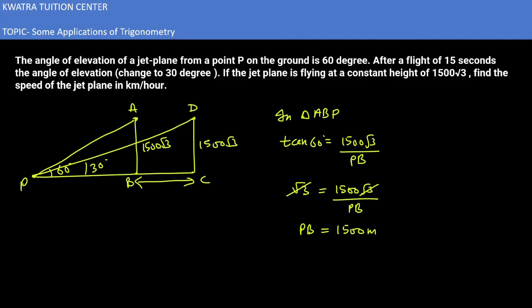Next triangle we consider, it would be PDC. Tan 30 is equal to DC which is 1500 root 3 over PC. Now here we get the PC value. It would be 1500 root 3 and tan 30 is 1 by root 3. So root 3 will multiply, so 1500 into 3 will give you 4500. So PC value is 4500 meter.